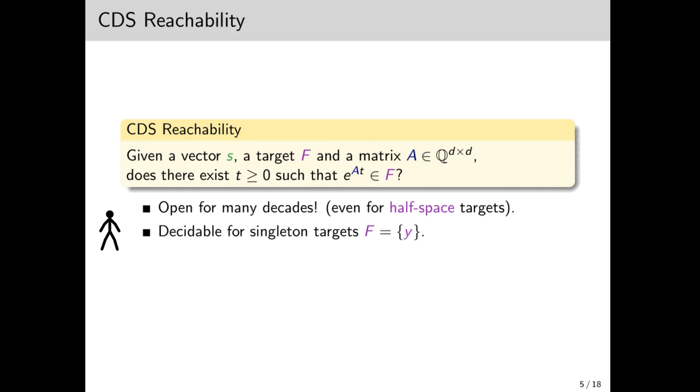It is known to be decidable when the target is a singleton, though, and even that is non-trivial. The fact that it's open is annoying, but it's known to have strong connections to problems in the offentine approximation, so its decidability would have huge consequences in number theory.